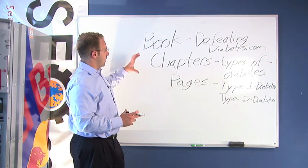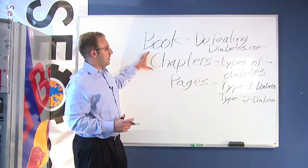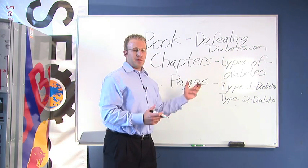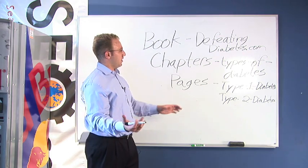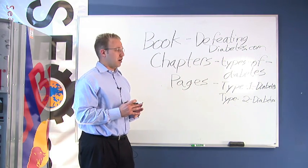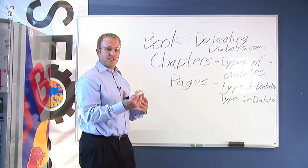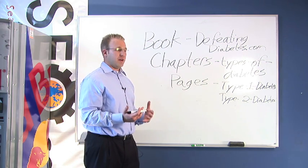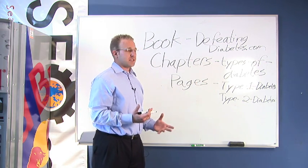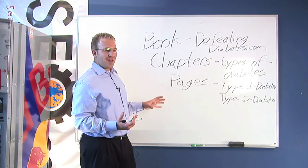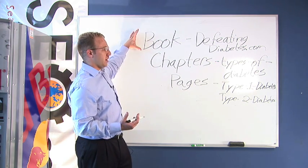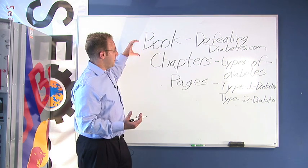Then you're going to go into your chapters. This chapter in particular, 'Types of Diabetes,' will have keywords that have to do with types of diabetes specifically, to draw the search engine into the topics of type 1 diabetes, type 2 diabetes, and further pages that are going to fit within this chapter of the book about diabetes.